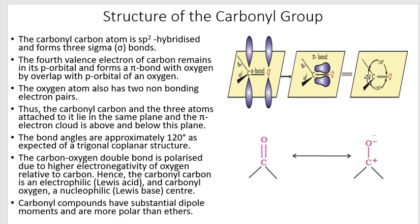Remember: the three atoms around the carbonyl carbon remain in the same plane; pi electron density remains above and below the plane; bond angle is 120 degrees. As the size of the substituent atoms increases, the bond angle between the larger groups increases while the angle with the smaller group decreases slightly. This polarity is described by the resonance structure.